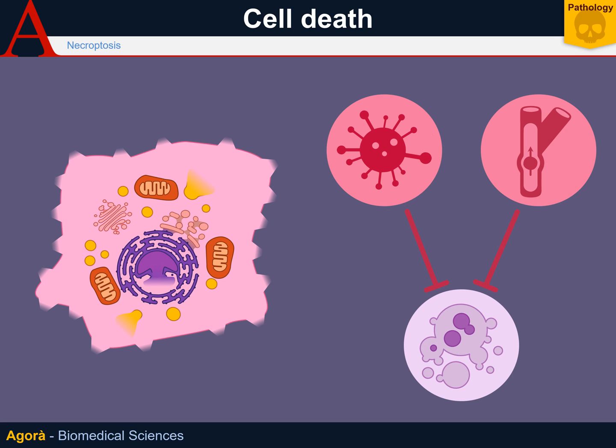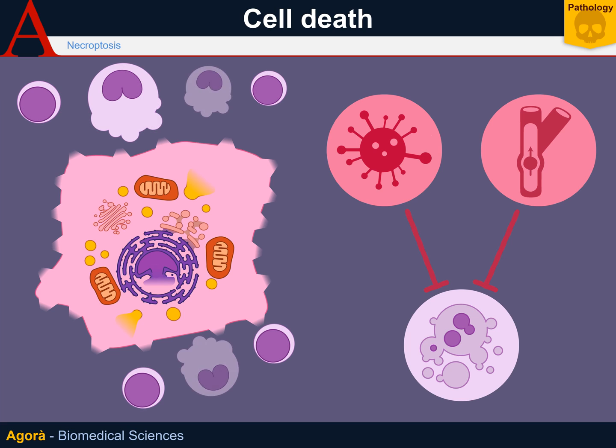When the cell cannot enter apoptosis but has to die for the organism's sake, it opts for necroptosis, which is extremely inflammatory. But inflammation is not always a negative thing. In fact, when viral, necroptosis is preferred to apoptosis, because in this way the inflammatory system is notified of the viral damage.